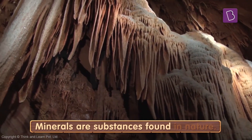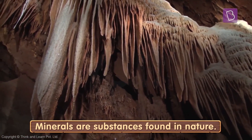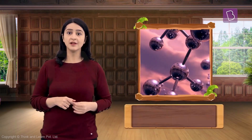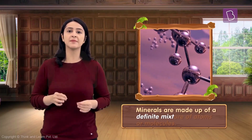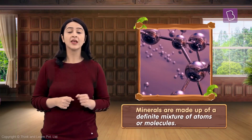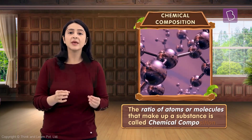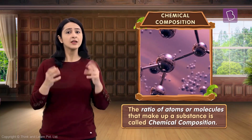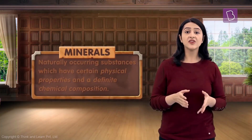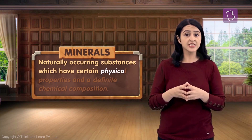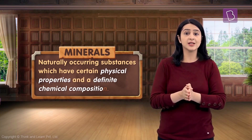Minerals are substances found in nature. Humans like you and me cannot create them out of thin air. Every time you examine a mineral under similar circumstances, you will come across the same characteristics and properties in it. This is possible because minerals are made up of a definite mixture of atoms or molecules. We describe the ratio of atoms or molecules that make up a substance as chemical composition. So what are minerals? Minerals are naturally occurring substances which have certain physical properties and definite chemical composition.